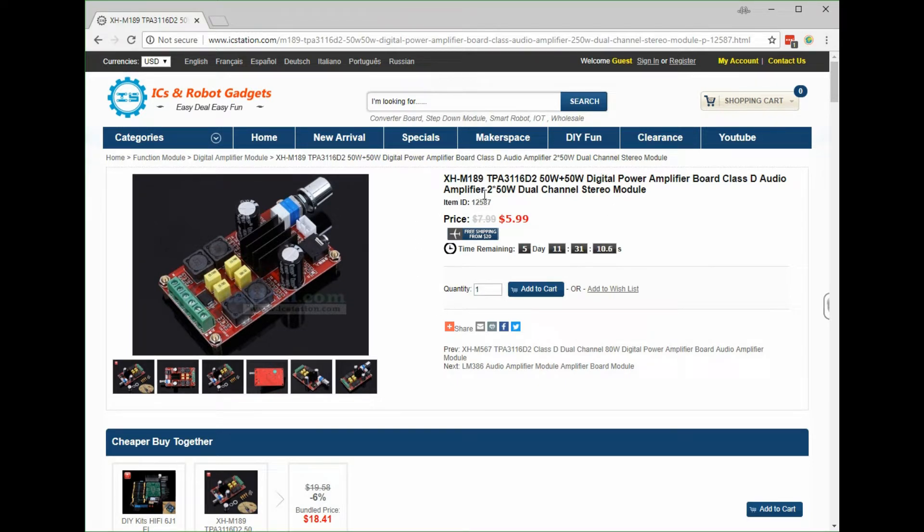Today I'm going to look at this amplifier, the XH M189. This is a 60 watt per channel stereo amplifier board. It's class D, a digital amplifier, and it's been very kindly sent to me free of charge by icstation.com. The listed price when I looked it up online was $5.99, quite a low price for such a powerful amplifier.